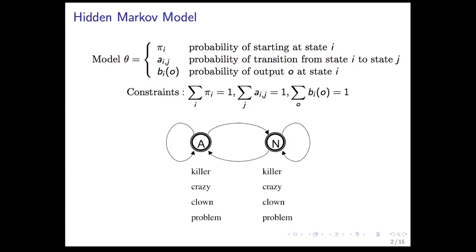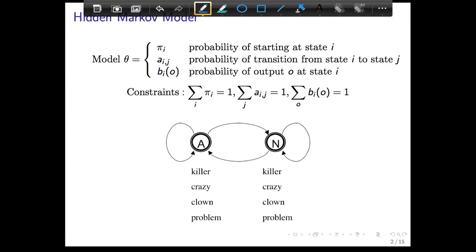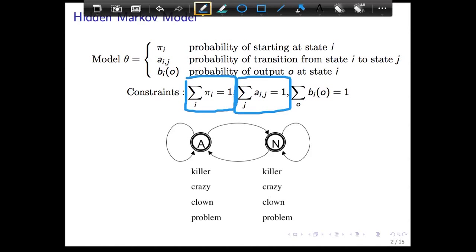To remind you, an HMM is entirely defined by these probabilities: the start probability — one for each state — the transition probability — also one for each state — and the emission probability, also one for each state. The important conditions to keep in mind are the constraints that say that for each state, these probabilities should sum to one.